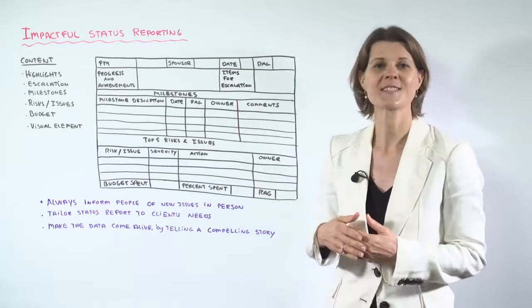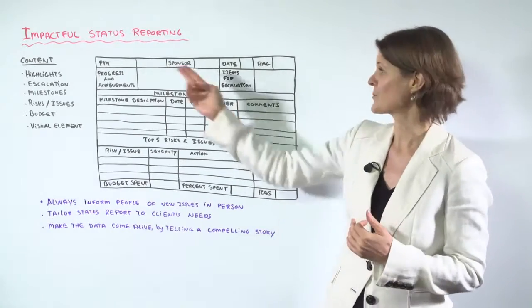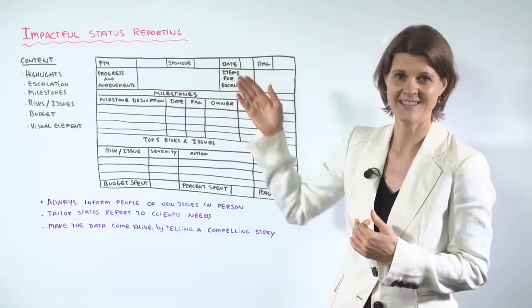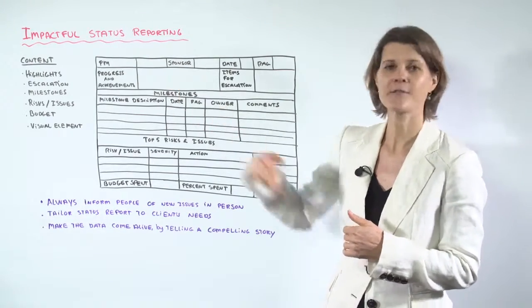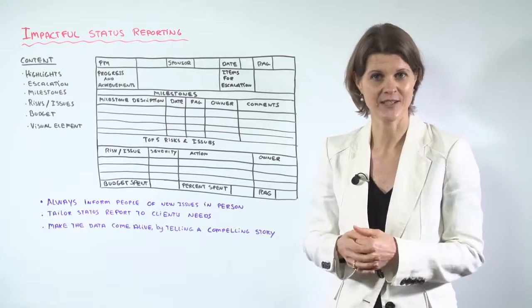At the top we've got some standard fields such as who is the project manager, the date, and the RAG red amber green status. And then I've got some space here for progress and achievements. It's a bit of an executive summary.